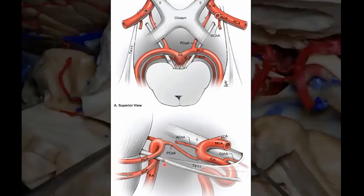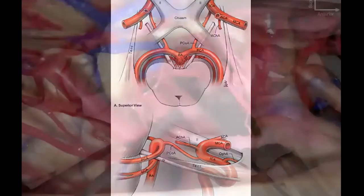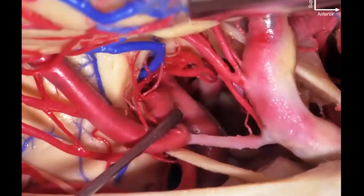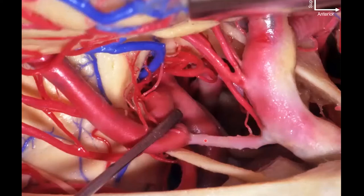CN 3 is medial to the free edge of the tentorium, going into the oculomotor triangle, all occurring posterior to the optic chiasm where we find CN 2. This is a lateral perspective of the right side — here's that free edge of the tentorium. We're looking supratentorially and here is the carotid — this is our C7 communicating carotid — giving off that posterior communicating artery, anastomosing with the posterior cerebral artery.